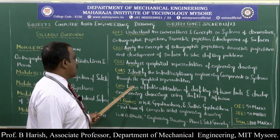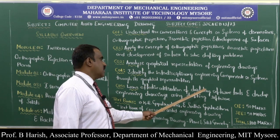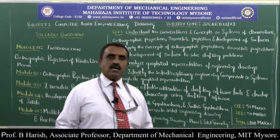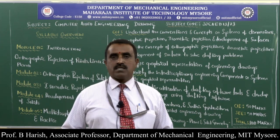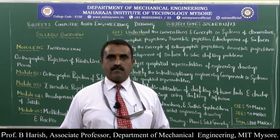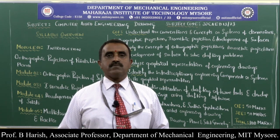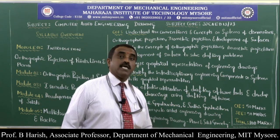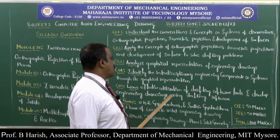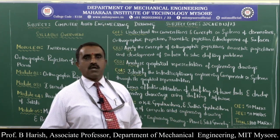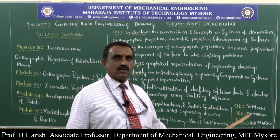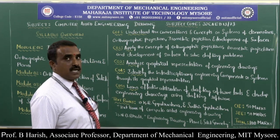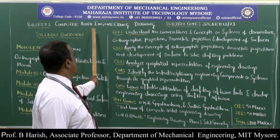The fifth CO says: learn effective utilization of drafting software tools and develop engineering drawings using drafting software. Here you draw on a sheet and solve the same drawings on the system using software, relating to solving problems on a system. These are the five COs identified for the subject Computer Aided Engineering Drawing, subject code 22-CAD-13-23.